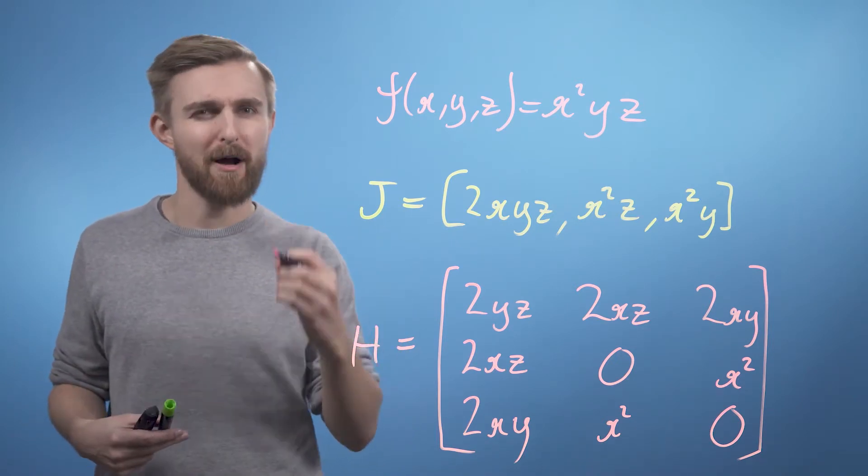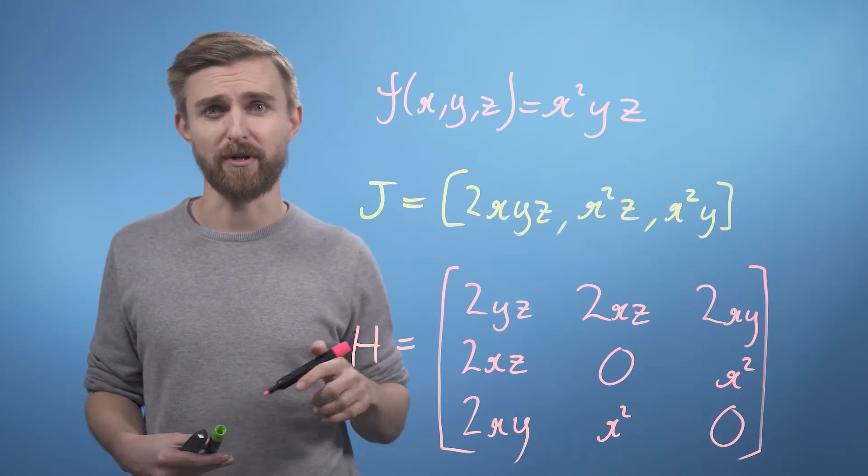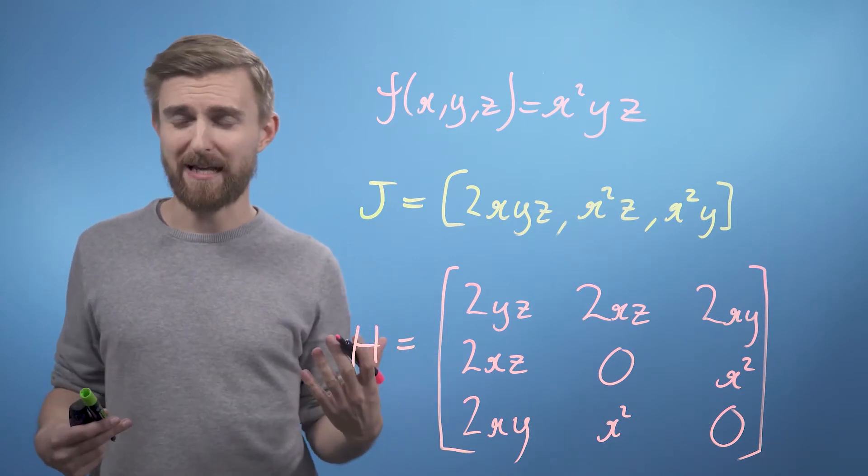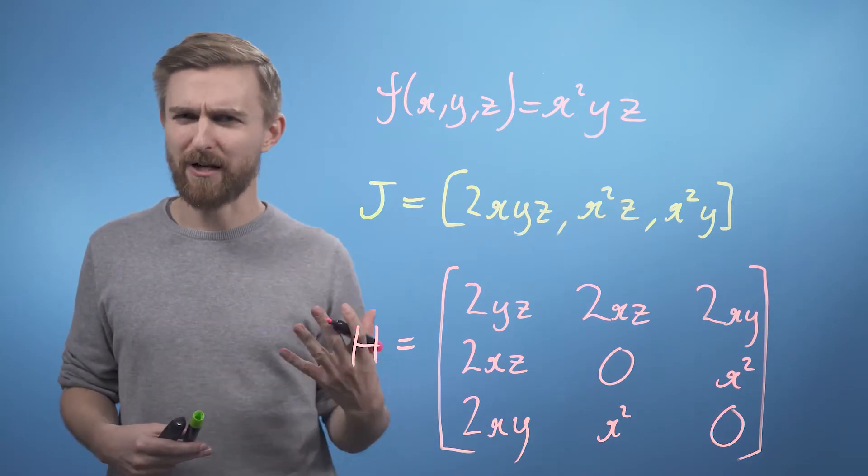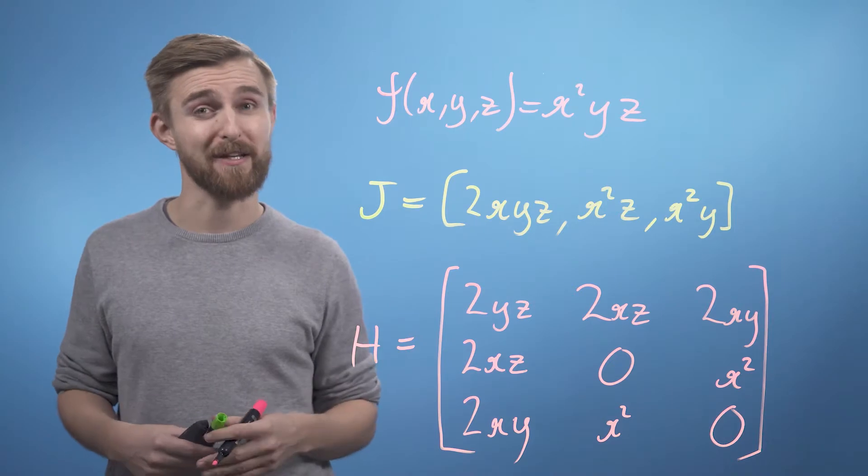We could now simply pass our Hessian an x, y, z coordinate, and it will return a matrix of numbers, which hopefully tells us something about that point in the space. In order to visualize this, we're going to have to drop down to two dimensions again.